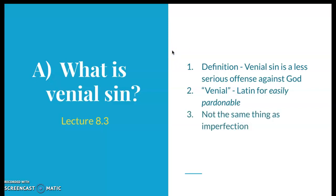A venial sin is not the same thing as an imperfection. Think of an imperfection as a fault that arises from ignorance or weakness, whereas a venial sin arises out of a bad will. The big difference is that an imperfection is something we have because of some ignorance or weakness, but a venial sin is sinful because it involves a bad will.